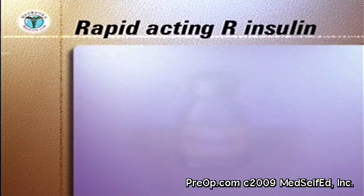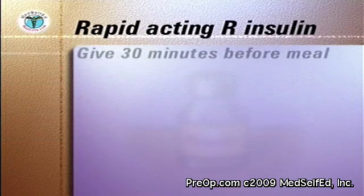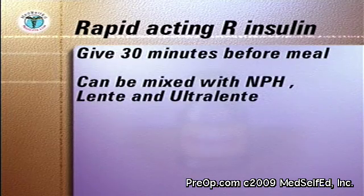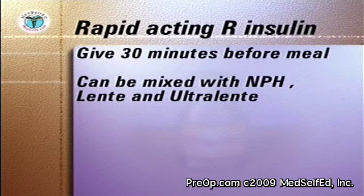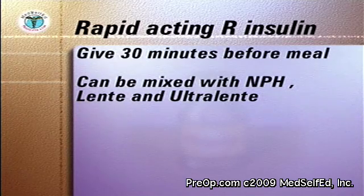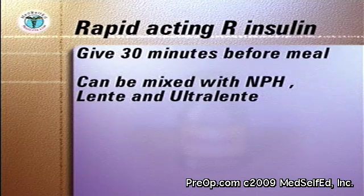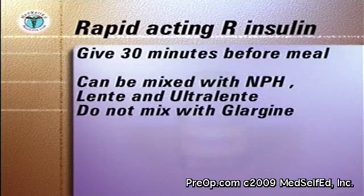Regular insulin is usually given 30 minutes before a meal. It can also be mixed in the same syringe with longer acting NPH, Lente, and Ultralente insulins, or given separately, immediately after each other. Glargine cannot be mixed with it.